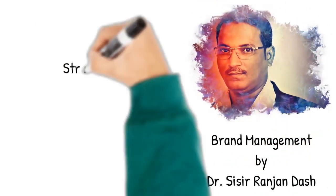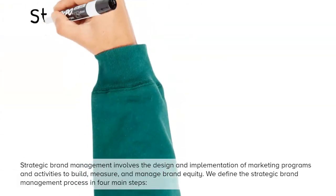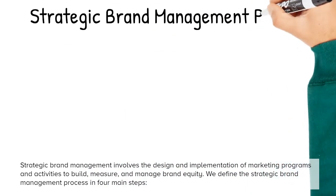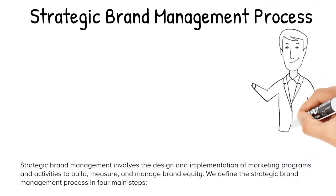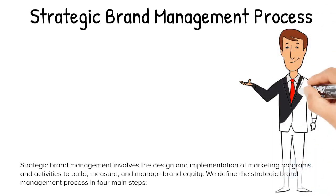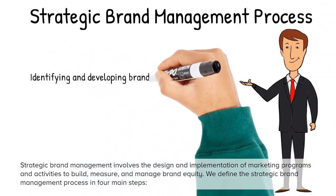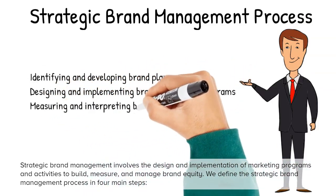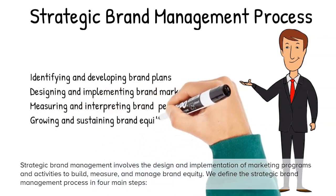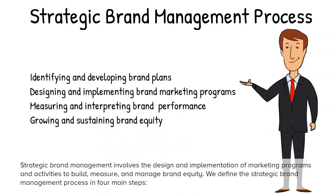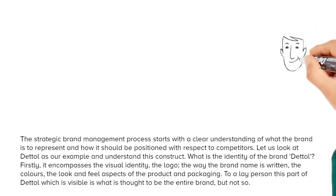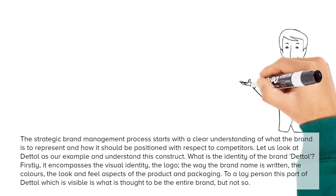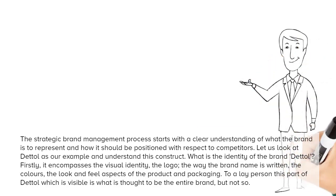Strategic brand management involves the design and implementation of marketing programs and activities to build, measure, and manage brand equity. We define the strategic brand management process in four main steps: identifying and developing brand plans, designing and implementing brand marketing programs, measuring and interpreting brand performance, and growing and sustaining brand equity. The process starts with a clear understanding of what the brand is to represent and how it should be positioned with respect to competitors.